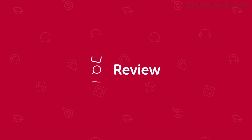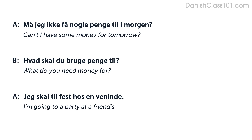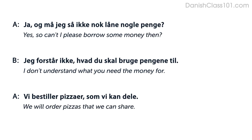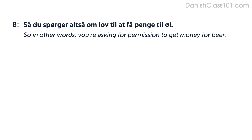Let's review the dialogue again. See if you can understand more this time. Må jeg ikke få nogen penge til i morgen? Hvad skal du bruge penge til? Jeg skal tage fest hos en veninde. Har du fået lov til at tage til fest? Ja, jeg har fået lov. Jeg spurgte om lov i går. Nå, ja. Og må jeg så ikke nok låne nogen penge? Jeg forstår ikke hvad du skal bruge pengene til. Vi bestiller pizzaer som vi kan dele. Så du spørger sig om lov til at få penge til øl?